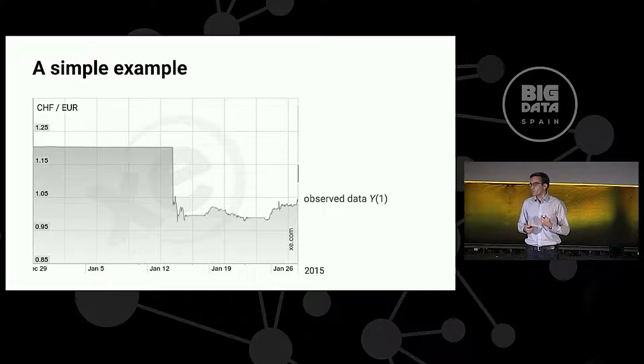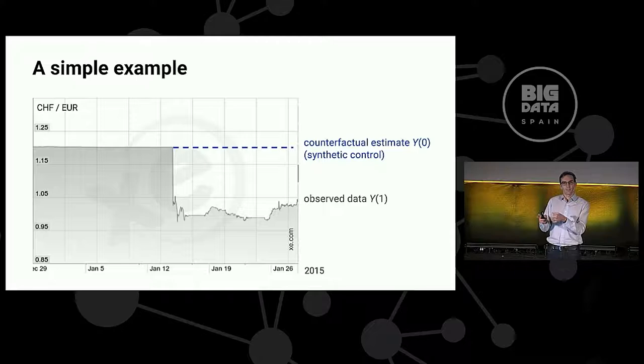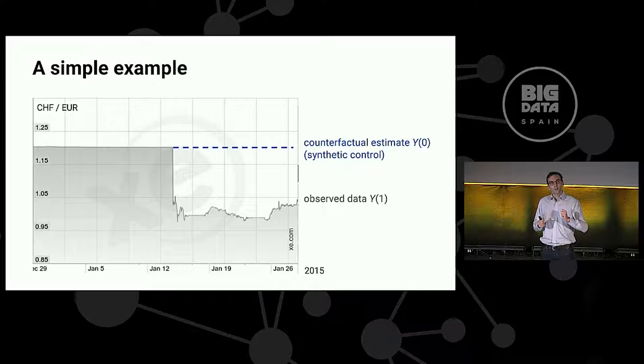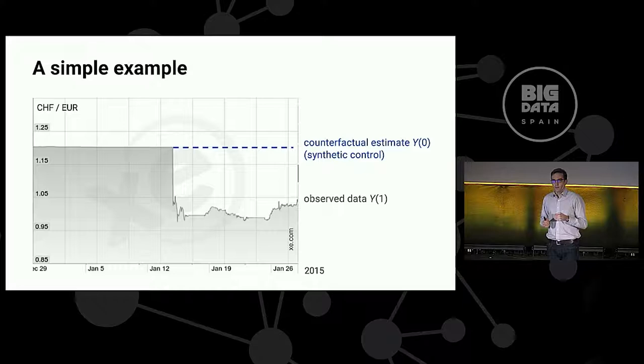Now, from a causal inference point of view, the question that we want to answer is, what was the effect of publishing that press release? And the answer is pretty simple because we would probably all agree that this is what would have happened to the exchange rate, had that press release not been published. In the language of causal inference, we have our observed data Y1, and all we need to do to understand causal effects is to estimate the counterfactual Y0, what would have happened in the absence of the action whose effects we're interested in.